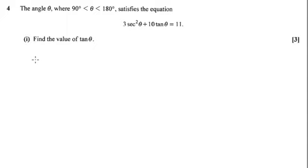We can use the relationship that tan²θ + 1 = sec²θ. So if we swap that in for the sec²θ up there, we're going to get 3(tan²θ + 1) + 10tanθ - 11 = 0.